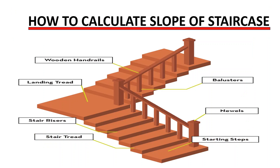We are back again, and on today's video we want to calculate the slope of our staircase. As you can see, this is how our staircase looks like. We have the tread, we have the risers, we have the step where we step, we have the newels, we have the balusters, we have the landing, and then we have the handrails — these ones here. These are the components of our stair.